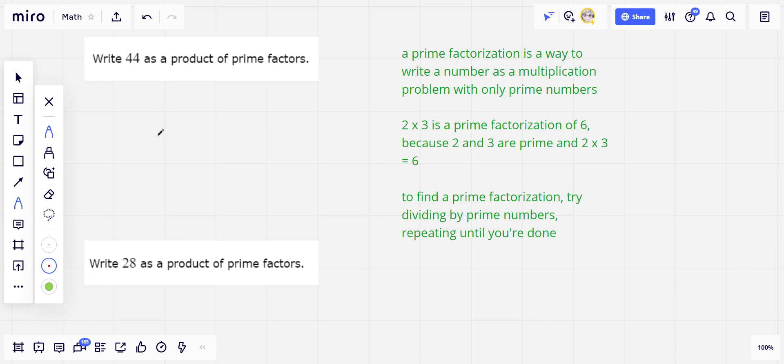2 and 5 are both prime numbers, so it represents 10 as a multiplication of its prime factors. So that's what we're supposed to do with all of these numbers. It says write 44 as a product of prime factors.